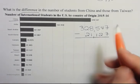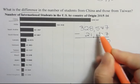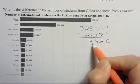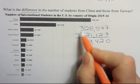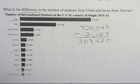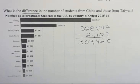So then we're going to subtract. 7 minus 7 is 0. 4 minus 2 is 2. 5 minus 1 is 4. 8 minus 1 is 7. 2 minus 2 is 0. And 3 minus nothing is 307,420. That's the difference between the students from China and those from Taiwan. Thanks and have a great day.